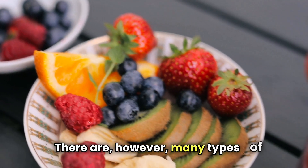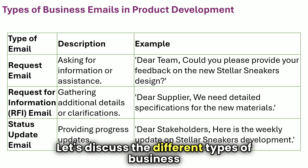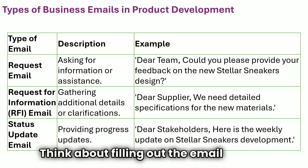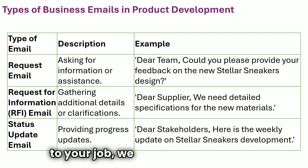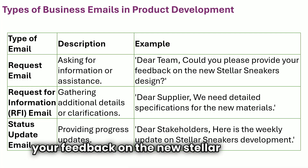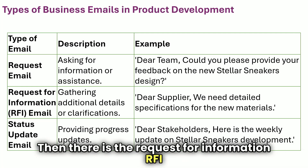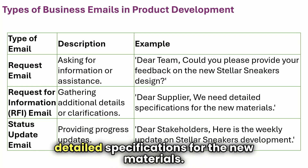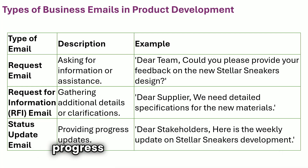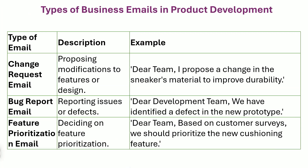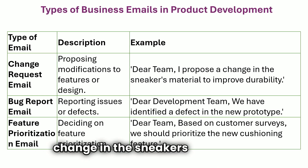There are many types of business emails. Let's discuss the different types you might encounter in product development, their purposes, and example introductions. We have a request email, which asks for information or assistance — for example: 'Dear team, could you please provide your feedback on the new Stellar Sneakers design?' A request for information (RFI) email gathers additional details or clarifications — for example: 'Dear supplier, we need detailed specifications for the new materials.' A status update email provides progress updates — for example: 'Dear stakeholders, here is the weekly update on Stellar Sneakers development.' A change request email proposes modifications to features or design — for example: 'Dear team, I propose a change in the sneakers material to improve durability.'